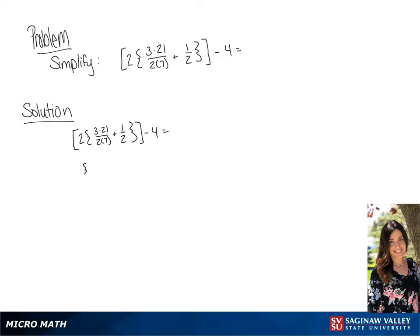We are going to simplify 3 times 21 over 2 times 7, so we get 63 over 14 plus 1 half in the parentheses, times 2 in the brackets, minus 4.